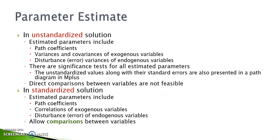By now, we all know that in SEM, we propose a causal model and compare the model-implied matrix with the observed matrix to get the estimated values of those unknown parameters. If we are working with an unstandardized model, the parameters we need to estimate include path coefficients, the variances and covariances of those exogenous variables, and the disturbance variances of endogenous variables.